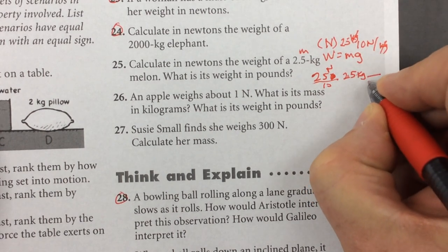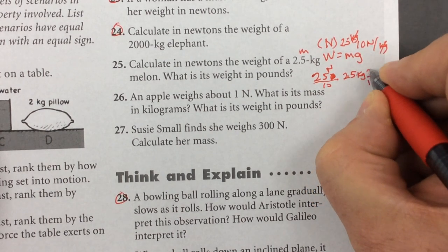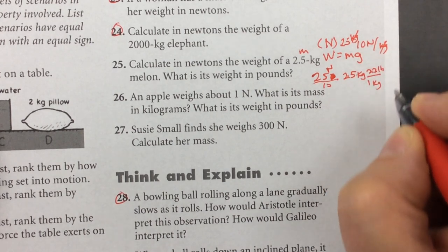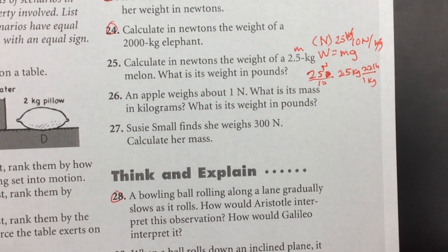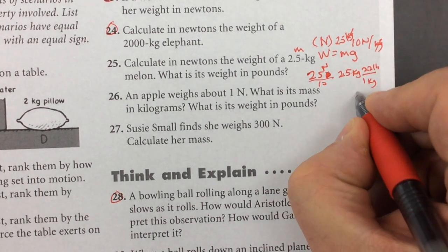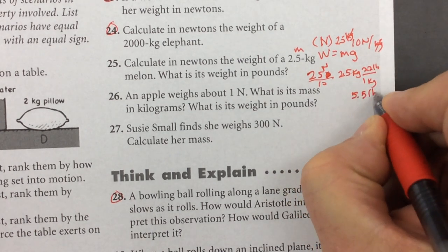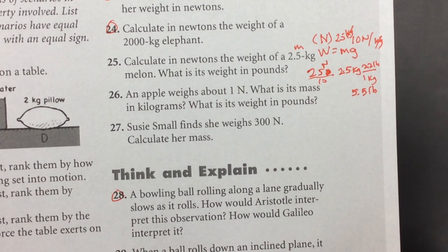And if I want to get that to pounds, I have to take 1 kilogram is 2.2 pounds, and that will give me 5.5 pounds. 5.5 pounds of melon.